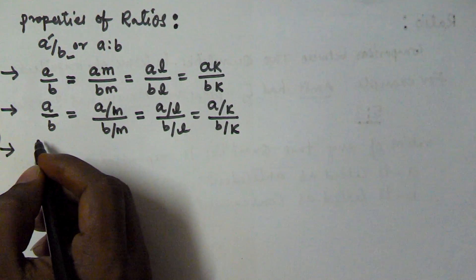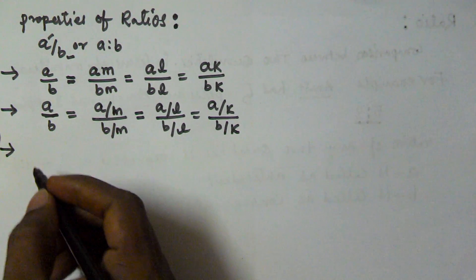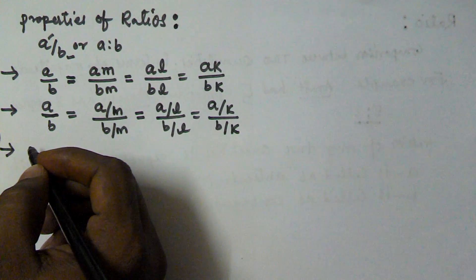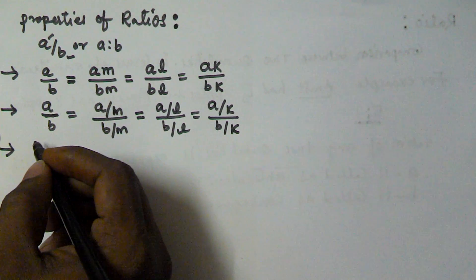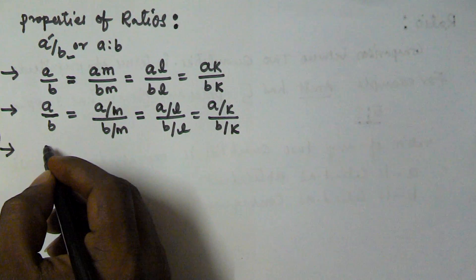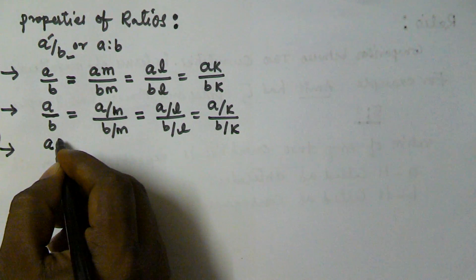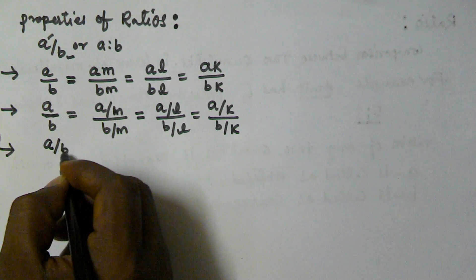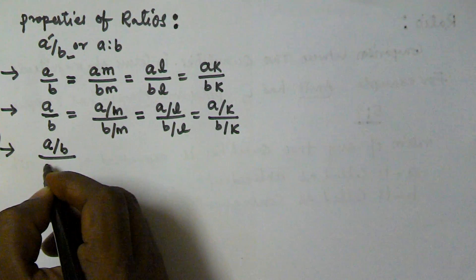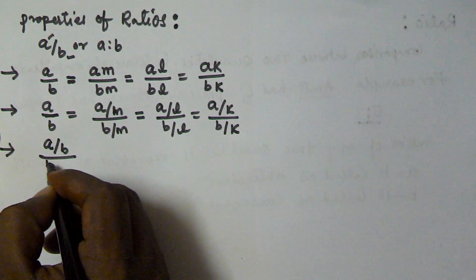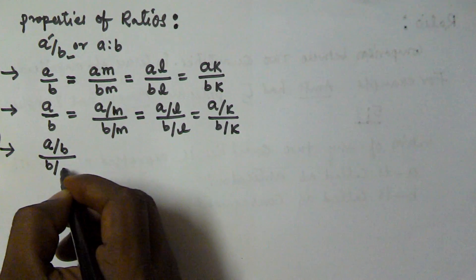The next property is: the ratio of two fractions can be expressed as a ratio of integers. For example, we have two ratios, a by b and b by c.